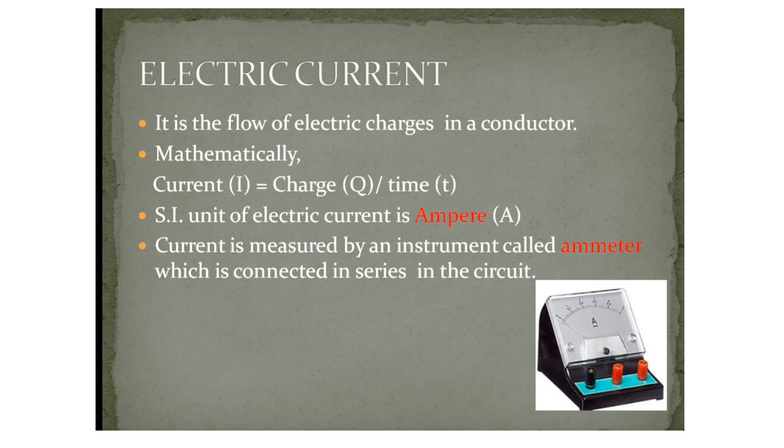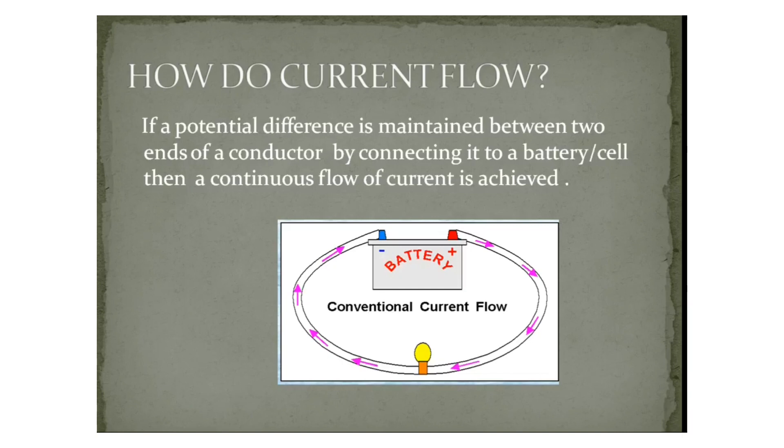The next topic is electric current. What do you mean by electric current and when does electric current flow? When there is a potential difference between the two ends of a wire, then we know that charges flow from one end to the other. This flow of charges in the wire constitutes an electric current. Here are some bullet points regarding electric current. Please pause the video and note it down. Current is equal to, mathematically, charge by time: I equals Q by T. Please note the SI unit of electric current is ampere, denoted by capital A. How do you measure electric current in a circuit? With the help of an instrument called an ammeter, which is always connected in series in the circuit.